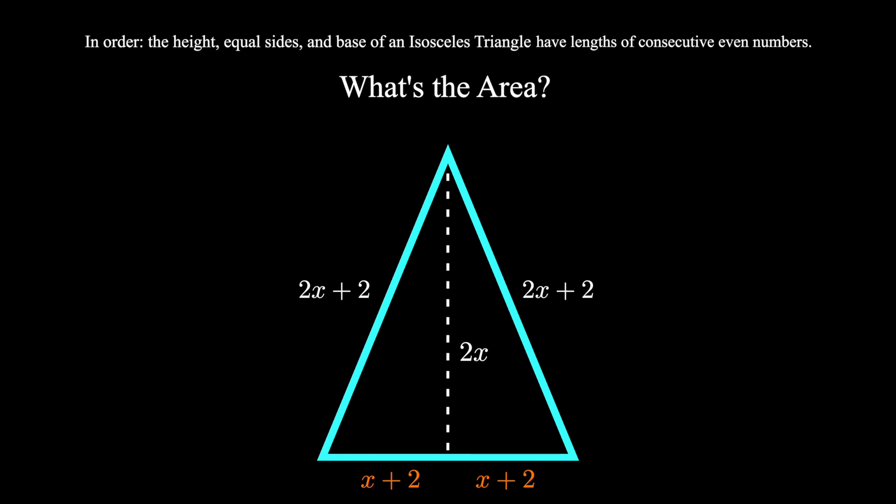And with this right triangle, we can take advantage of the Pythagorean theorem. a squared plus b squared equals c squared. Here a is 2x, b is x plus 2, and c is 2x plus 2.